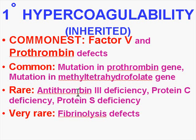The other inherited deficiencies are all rare — things like antithrombin 3 deficiency, protein C, protein S, and fibrinolysis defects. These are all very, very rare, and you'll likely never see one clinically, but you should probably know about them anyway.